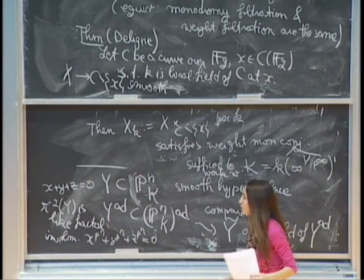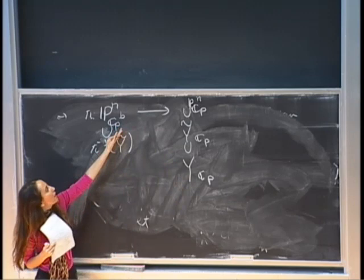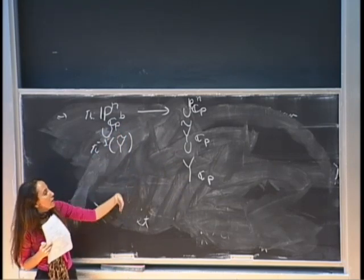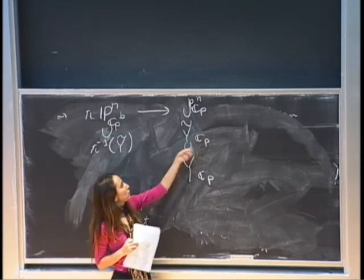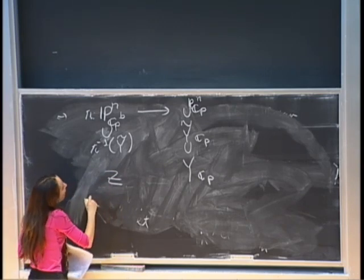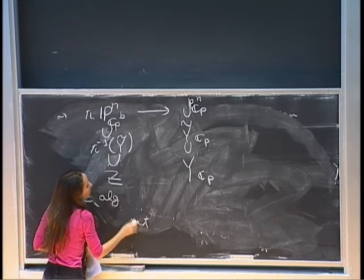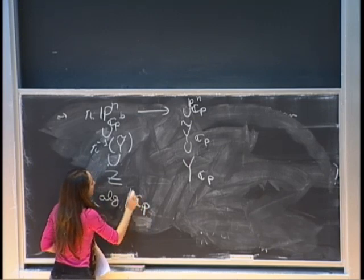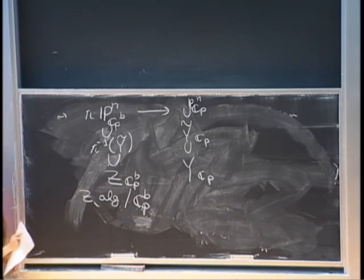The problem is that this inverse limit is not algebraic. So even if we can compare topological spaces, looking at the inverse image of Y inside projective space over the tilted field doesn't allow you to use Deligne's theorem. However, if you pass to an open neighborhood, you can find something algebraic Z over the tilted perfectoid field CP-flat.